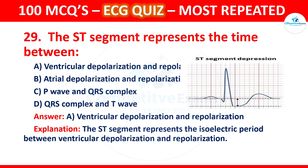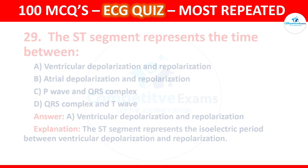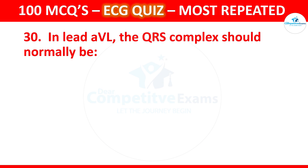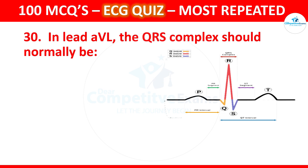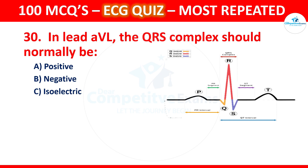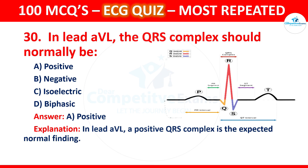Question 30: In lead AVL, the QRS complex should normally be which of the following? Options are positive, negative, isoelectric, or biphasic. The correct answer is positive. In lead AVL, a positive QRS complex is the expected normal finding.